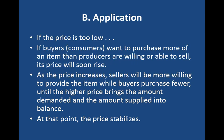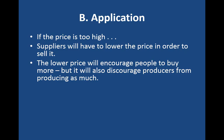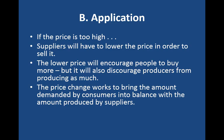If the price is too low, consumers want to purchase more of an item than producers are willing or able to sell. As the price increases, sellers will be more willing to provide the item while buyers purchase fewer, until the higher price brings the amount demanded and the amount supplied into balance — at that point, the price stabilizes. If the price is too high, suppliers will have to lower it, and the lower price will encourage people to buy more. I have a graph that's going to show this in just a moment.